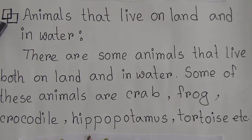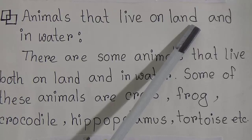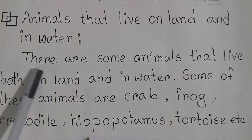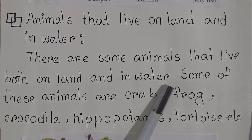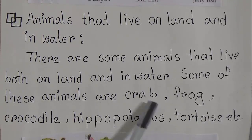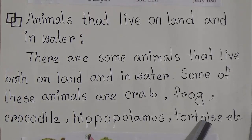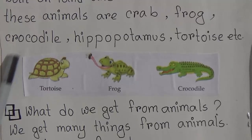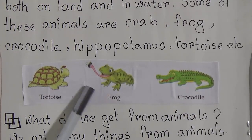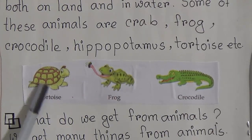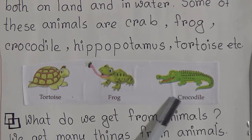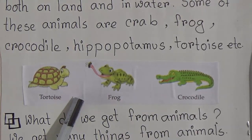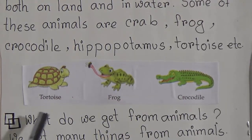There are some animals that live on both land and in water. Some of these animals are crab, frog, crocodile, hippopotamus, and tortoise. Here are pictures — this is a tortoise, this is a frog, and this is a crocodile. All live on both land and in water.